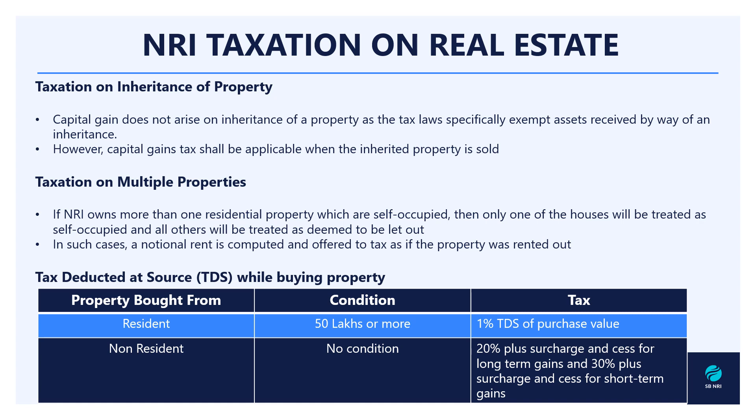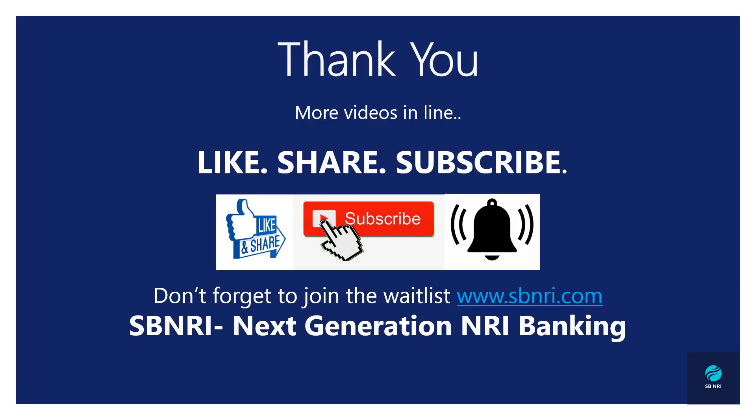When buying a property, NRIs are also subject to TDS. If you are buying a property from a resident Indian and the cost is 50 lakhs or more, you have to pay 1% TDS on the purchase value. If you are buying from a non-resident Indian, there are no such conditions — you will have to pay 20% plus surcharges for long-term capital gains and 30% plus surcharges for short-term capital gains. You need to determine whether it is a long-term or short-term capital gain for that particular NRI, and taxation will follow accordingly.